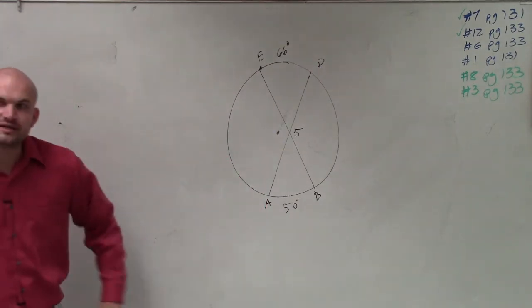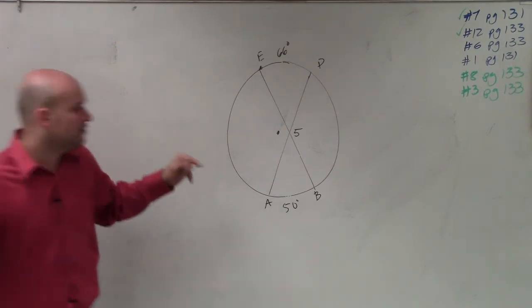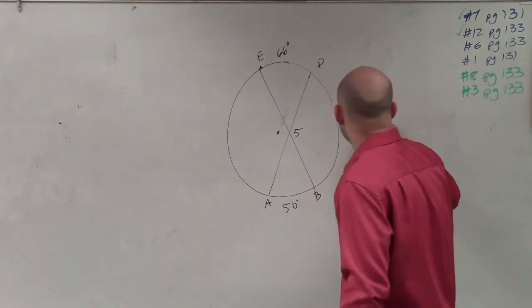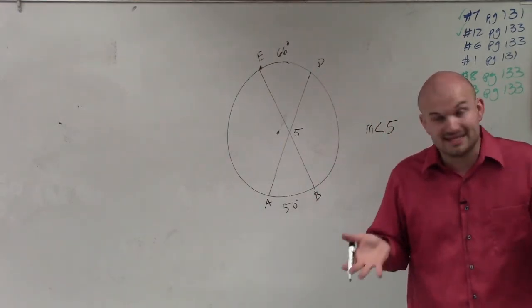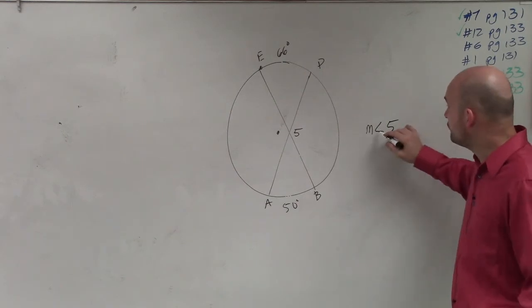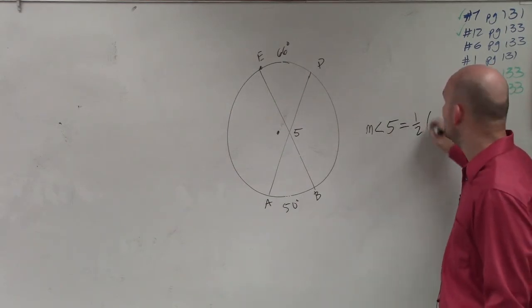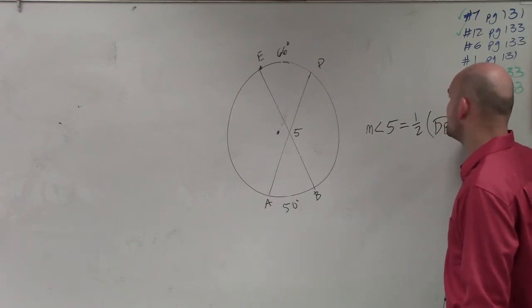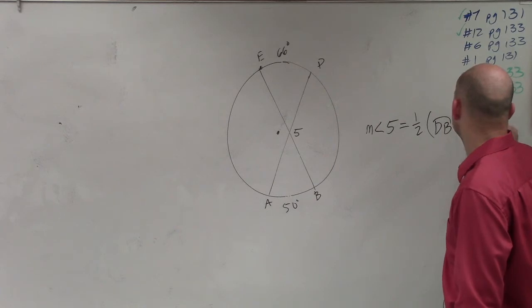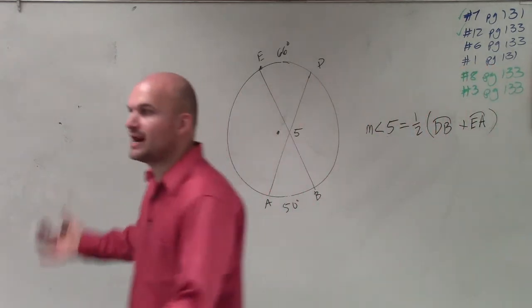So remember, ladies and gentlemen, for this formula, measure of angle five, when this angle's interior, when this angle's inside, measure of angle five is equal to 1 half the sum of my arc DB plus EA. Right? It's the sum of these two arcs times 1 half.